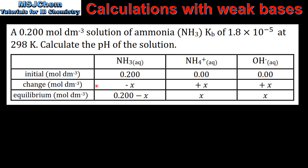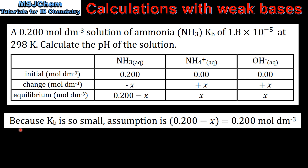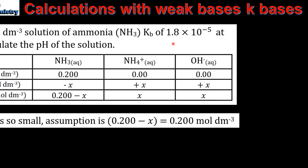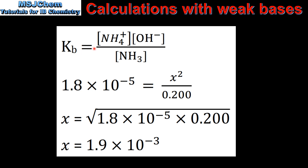The change in concentration is negative X for ammonia, and plus X for both the ammonium ion and the hydroxide ion. The equilibrium concentration is 0.200 minus X and X. As in the previous example, because Kb is so small, the assumption is that 0.200 minus X equals 0.200. Next we write our expression for Kb: the concentration of the ammonium ion multiplied by the concentration of the hydroxide ion, divided by the concentration of the ammonia.